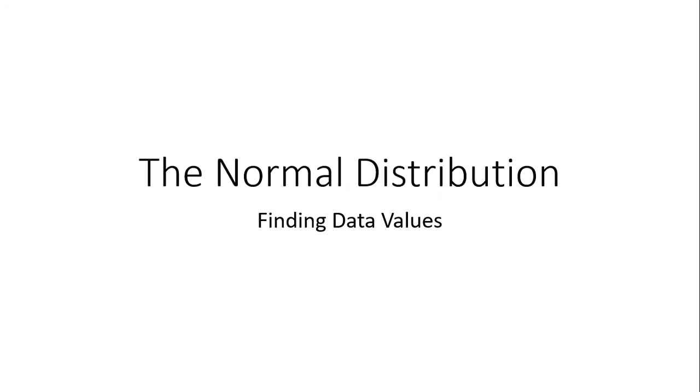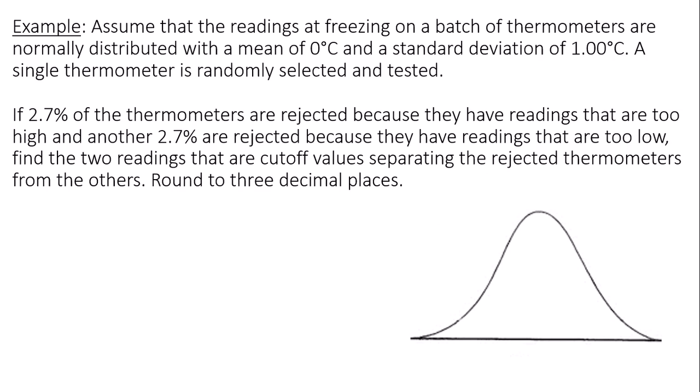This is a video on how to use the normal distribution to find data values. Assume the readings at freezing on a batch of thermometers are normally distributed with a mean of 0 and standard deviation of 1.